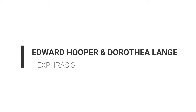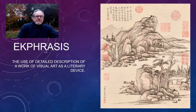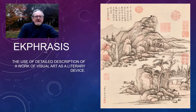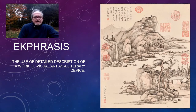The next thing we want to talk about is a literary device called Ekphrasis. It's the use of detailed description of a work of visual art as a literary device. And it's been around for a long time.